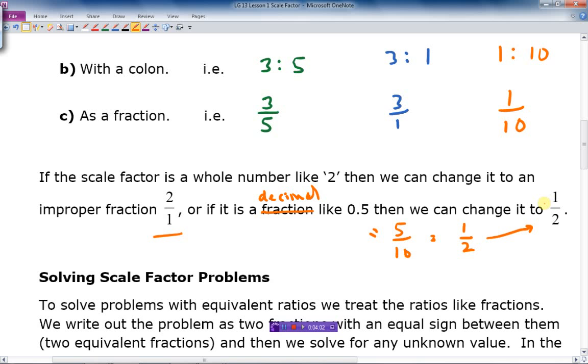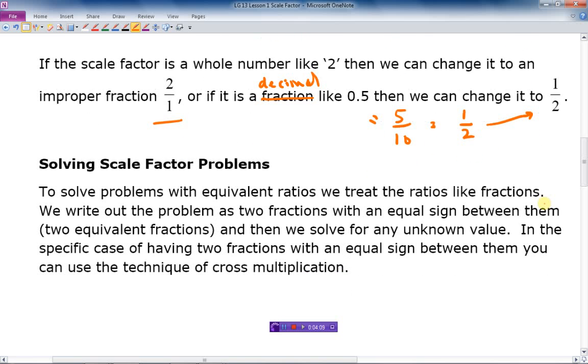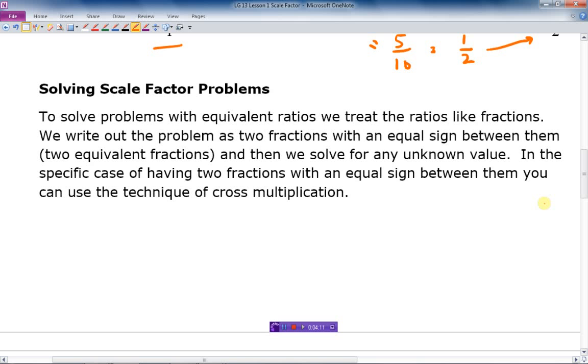That's just a couple of notes on how to write scale. But what about solving scale factor problems? Well, to solve problems with equivalent ratios, we treat the ratios like fractions. So we write out the problem as two fractions with an equal sign between them. In other words, two equivalent fractions means they're both equal. Then we solve for any unknown value. In the specific case of having two fractions with an equal sign between them, you can use the technique of cross multiplication.